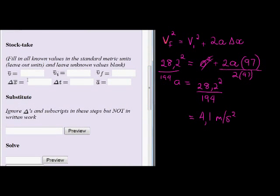Now we simply put in our answers. We know initial velocity was 0, future velocity 28.2, delta x is equal to 97, delta t was not given. Acceleration is what we worked out in the end.